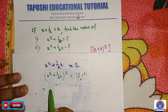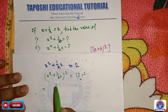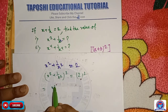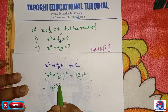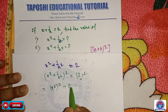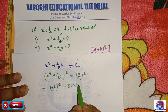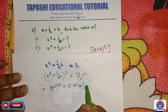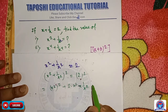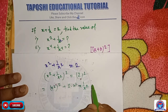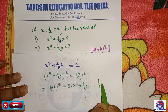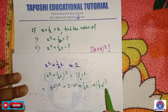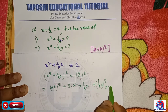We use the a plus b whole square formula, that is a square plus 2ab plus b square. So we write x square its whole square plus 2 into x square into 1 by x square plus 1 by x square its whole square is equal to 4.